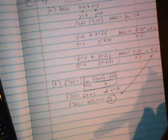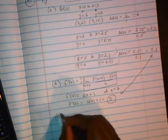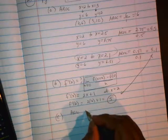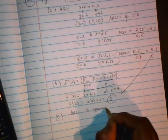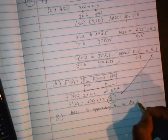And part c says compare the results obtained in part a with the result of part b. So you can say that the average rate of change is approaching 5 as the intervals get smaller.